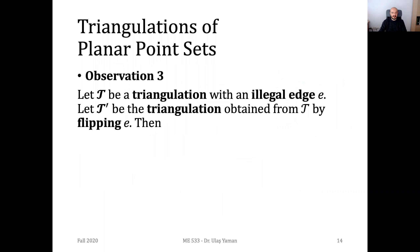Now we have some theorems and observations. This is the first one. We have an initial triangulation tau with an illegal edge e, as in the previous slide. We then have another triangulation tau prime, obtained from tau by doing a flipping operation on the illegal edge e.